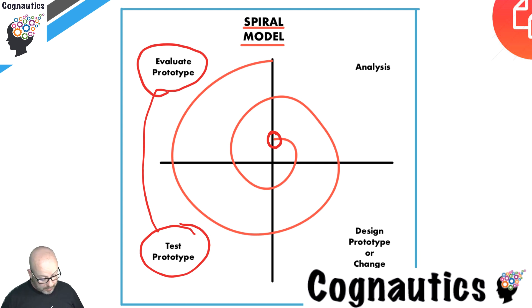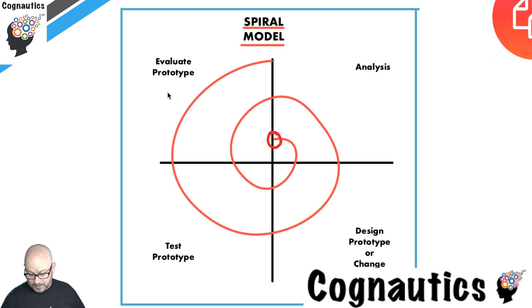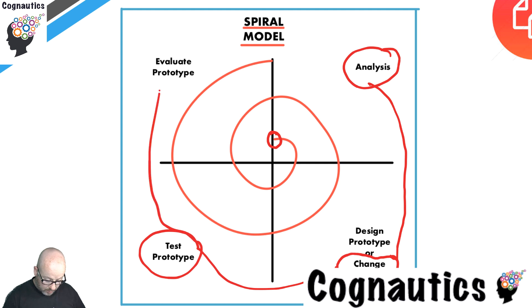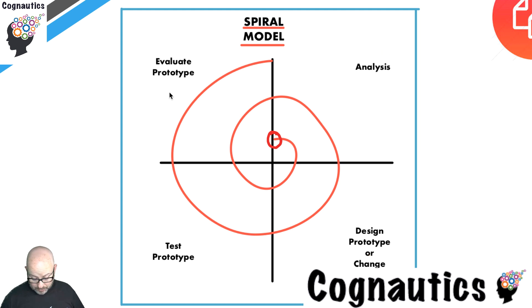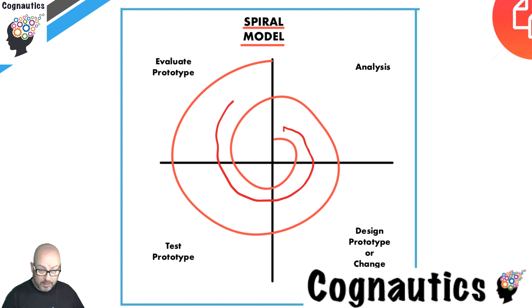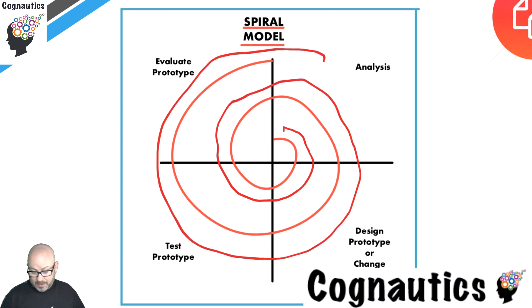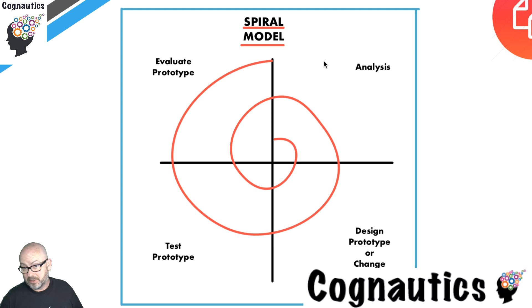The spiral then starts again and you analyze the prototype you've made. Having done that, you either change the prototype, then move on to test it and evaluate it. You can see why it's called the spiral — this methodology involves moving round and round, and the idea is that each circle gets you closer and closer to the final product. This is a mixture of a waterfall and an iterative methodology.